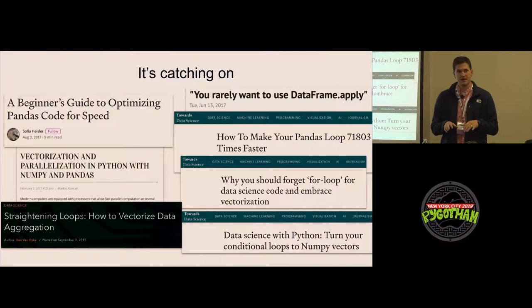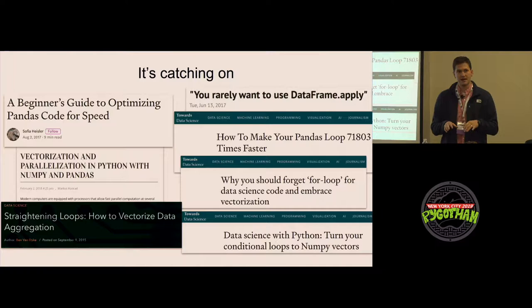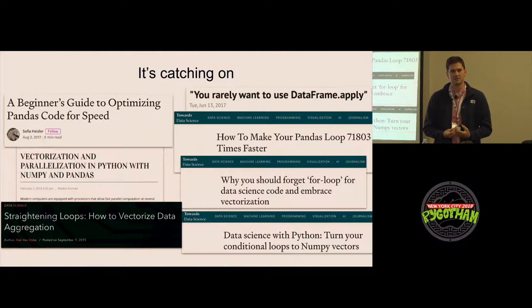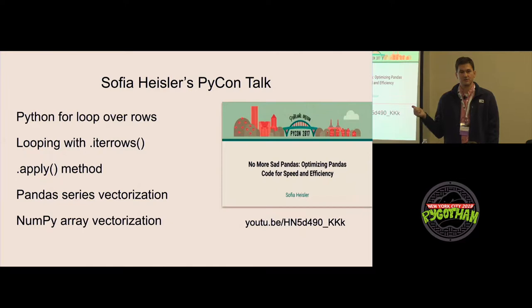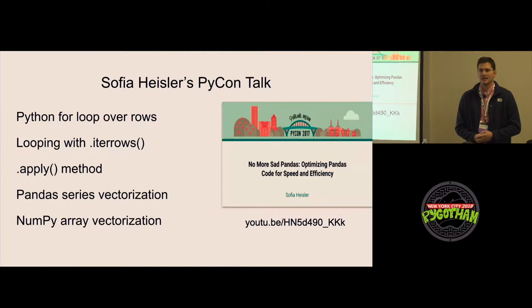This is a topic that people are starting to talk a lot about. So I googled Pandas NumPy vectorization, and these were screenshots of several articles that were popping up. By and large, they all kind of have the same thesis, which is don't do for loops if you can help it. Do vectorization. And if you're new to this topic, I highly recommend Sophia Heisler's PyCon talk from 2017. This was my introduction to this. It's a fantastic talk.